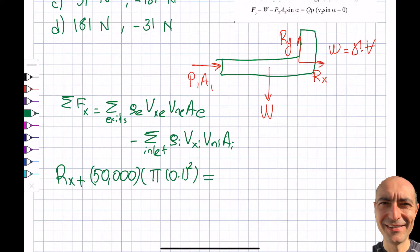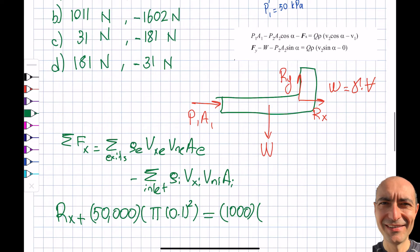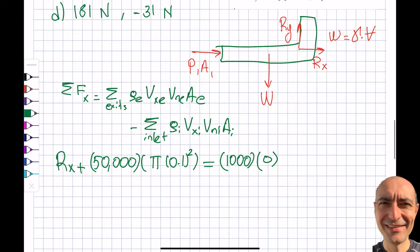Will be equal to, on the right hand side I have myself density, density is 1000, Vx exit. So you can see this is the inlet, this is the exit, Section 2. So the component of this in the x direction will be 0. So I don't want to write the rest of it. This term dropped out basically.